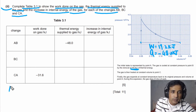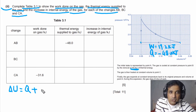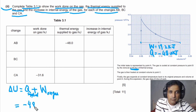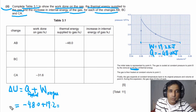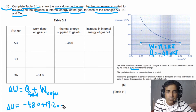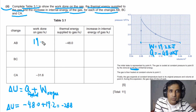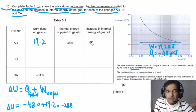Using the first law of thermodynamics — delta U = Q + W_on — for A to B: delta U = (−48.0) + (19.2) = −28.8 kJ. So internal energy decreases by 28.8 kJ from A to B. We can now fill in the table: work done on gas = +19.2 kJ, and increase in internal energy = −28.8 kJ.